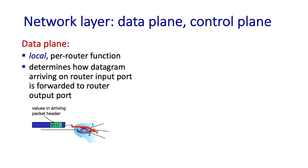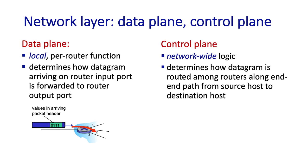In the case of the router, this is really the issue of how a packet is moved from an input port to the appropriate output port. The second piece of the network layer is the control plane — the network-wide logic that determines the datagram's path from source to destination. It's also where network management and device configuration management come into play.